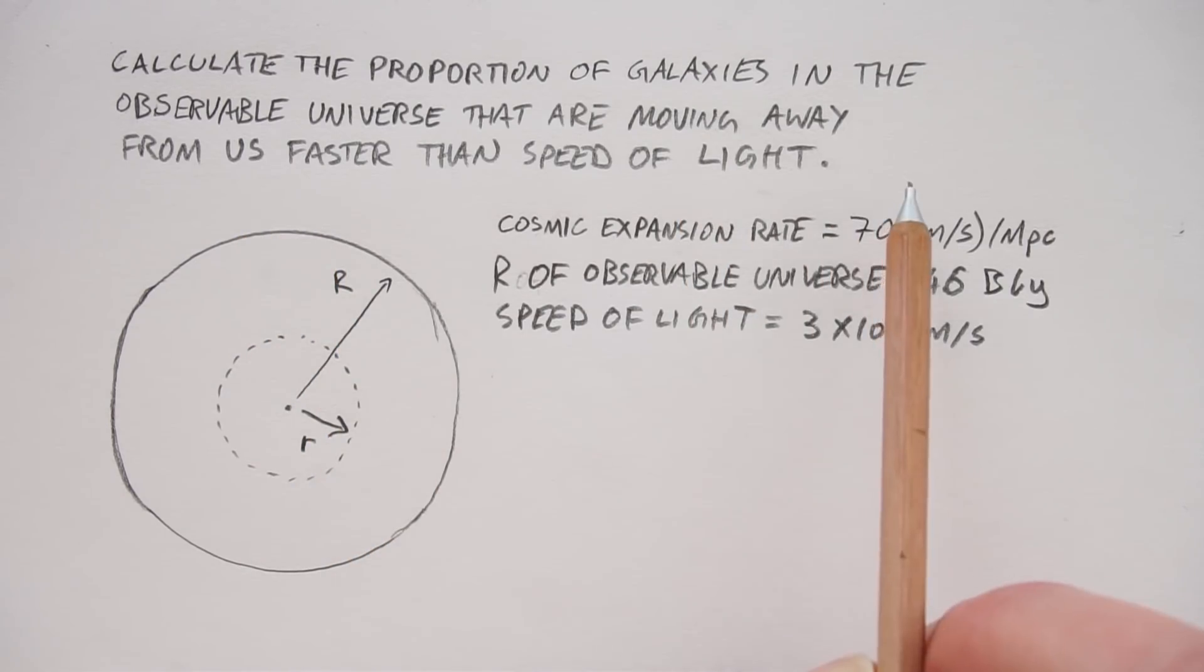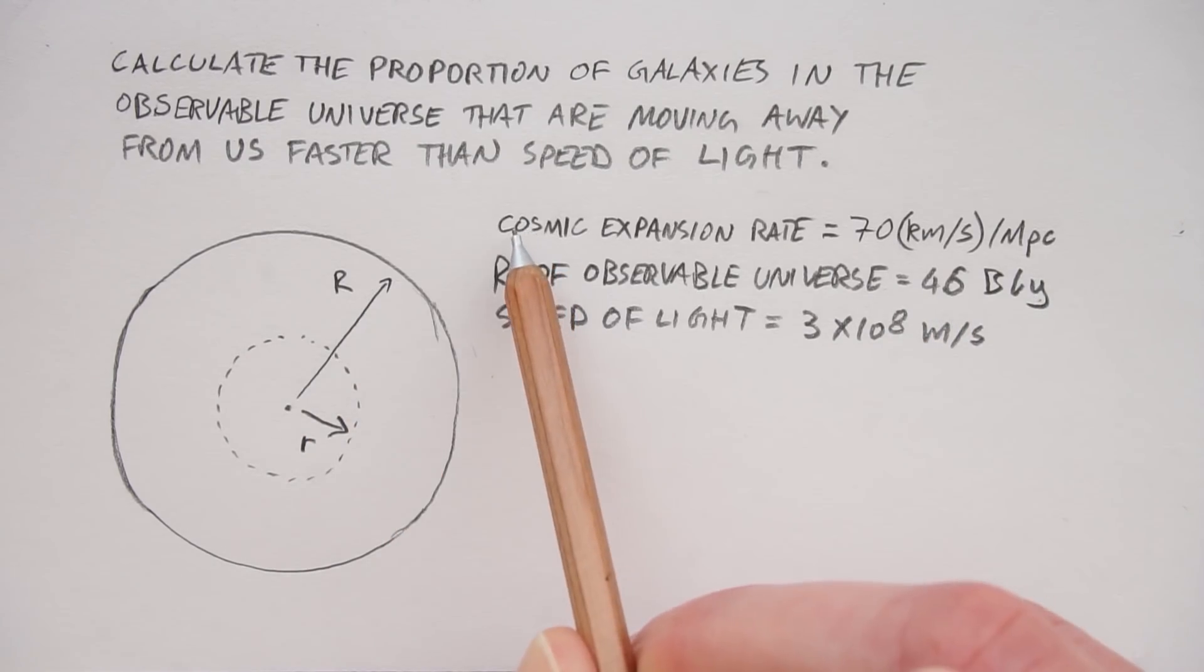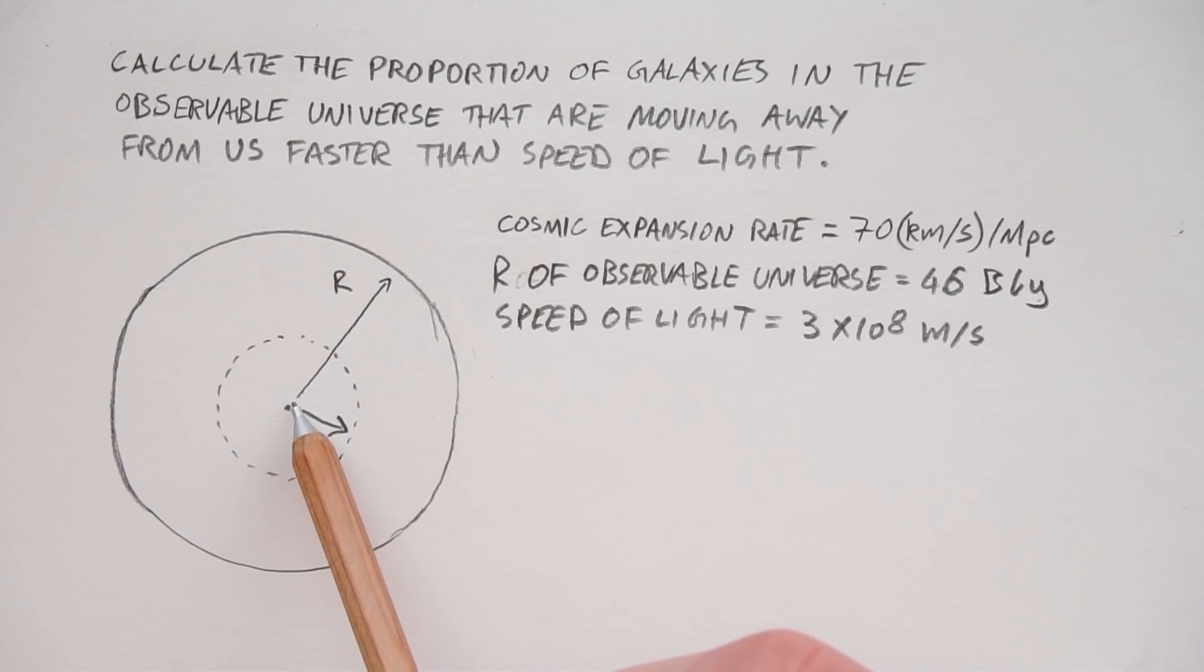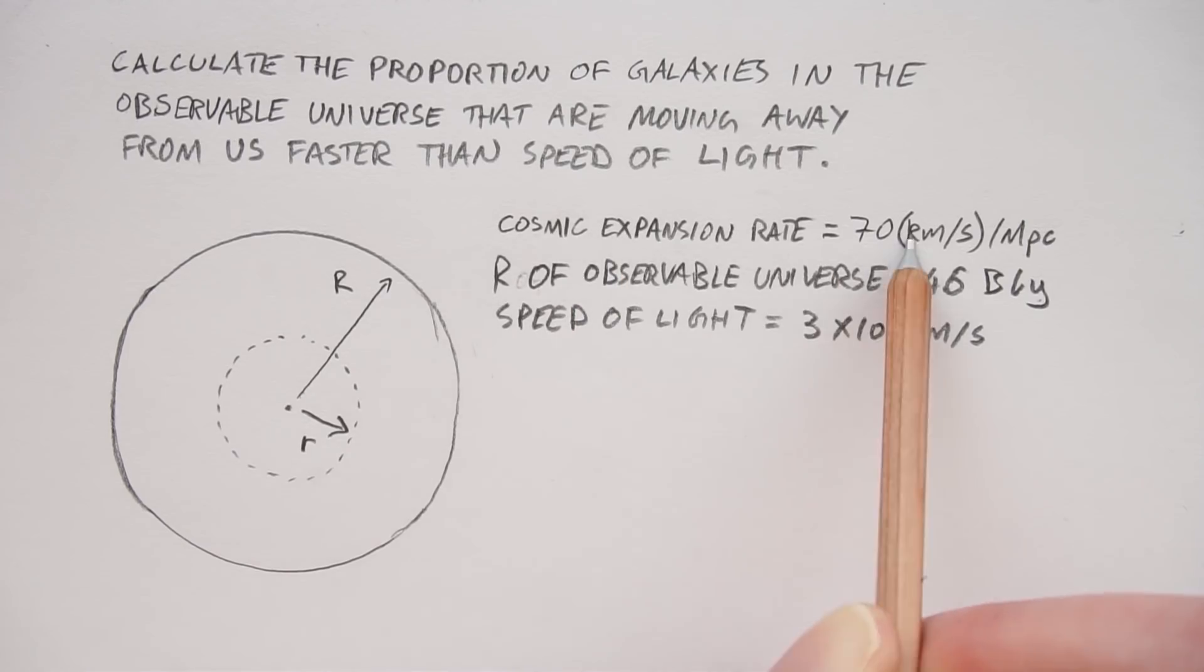And to solve this we need a few numbers. First of all, this is a diagram of the observable universe with a radius of 46 billion light years. We've also got the cosmic expansion rate which is 70 km per second per megaparsec. So we're here in the Earth, every megaparsec we go away, cosmic expansion rate increases by 70 km per second. And then we've got the speed of light which we'll need.